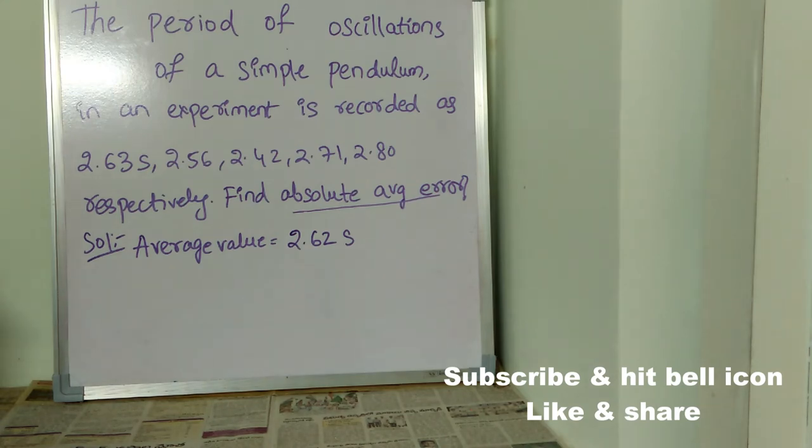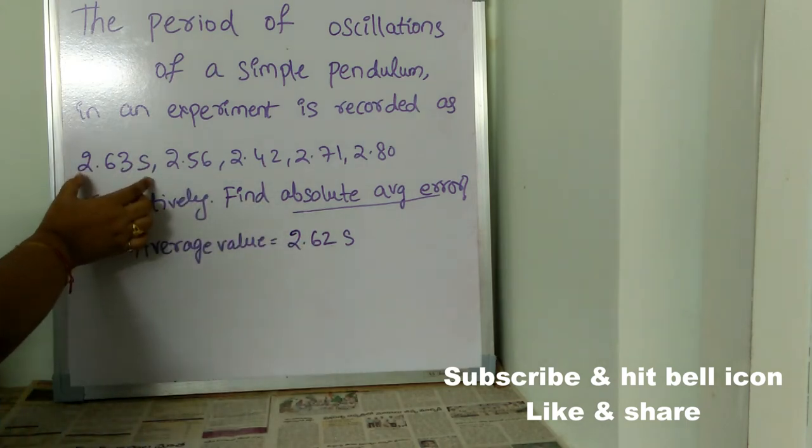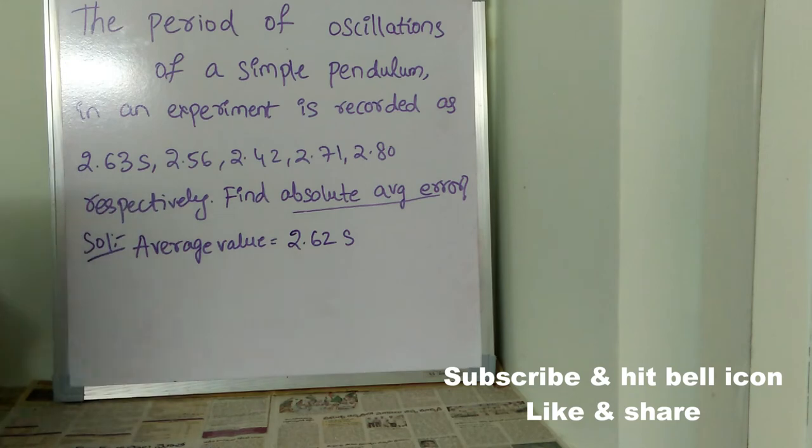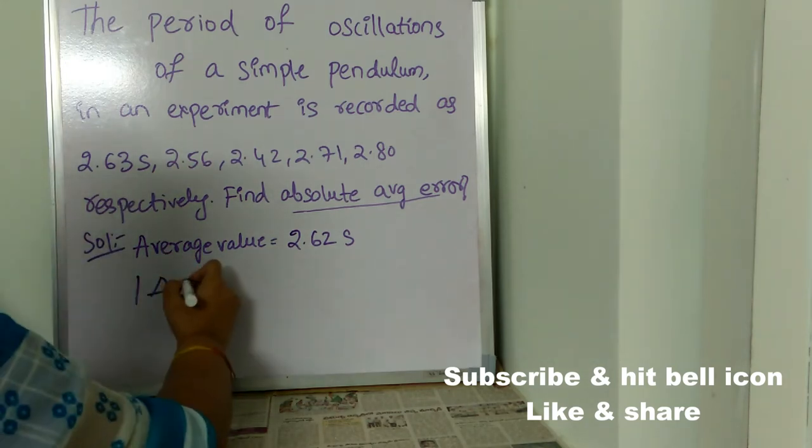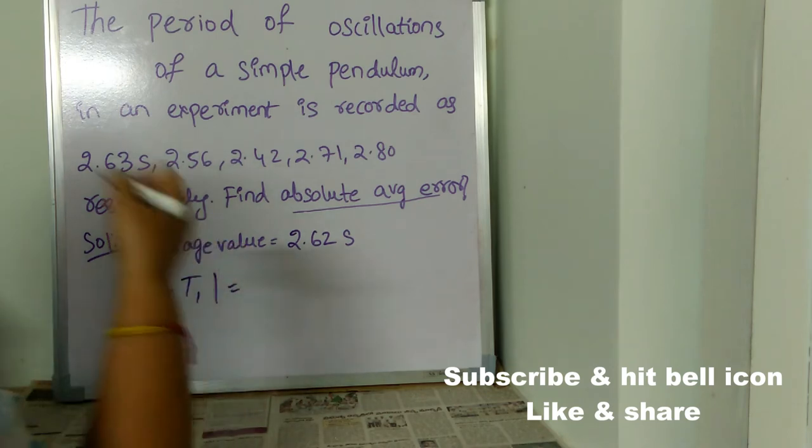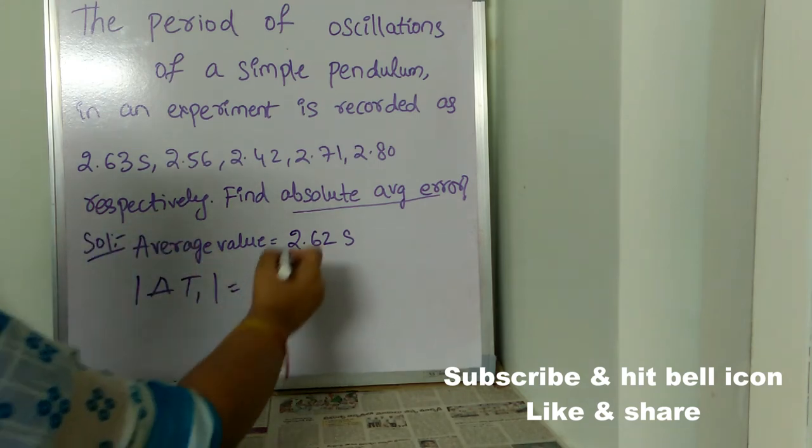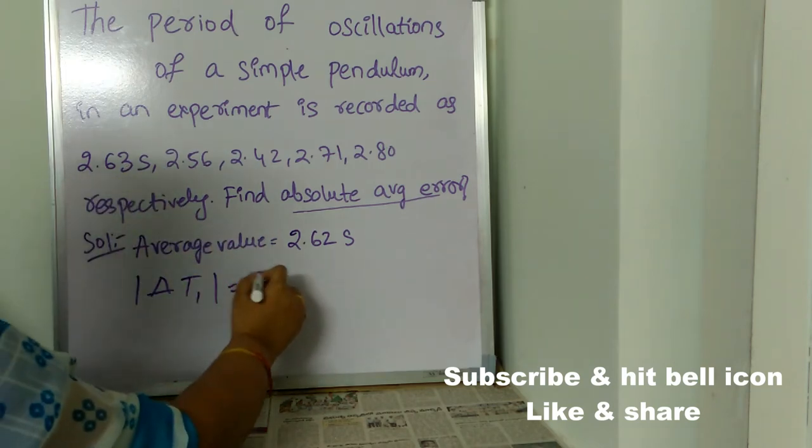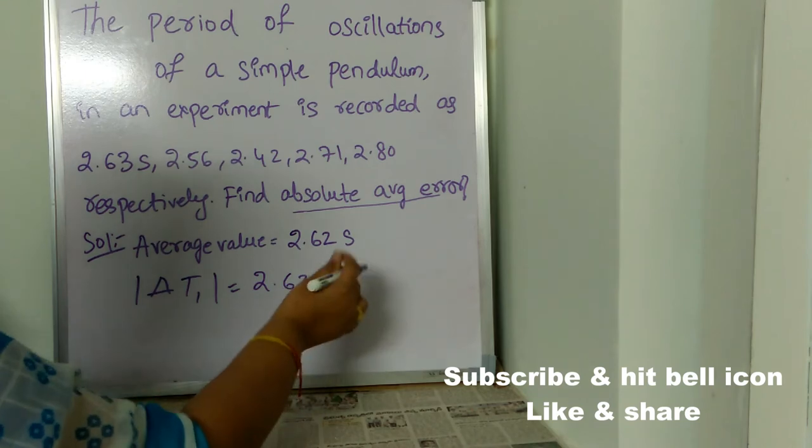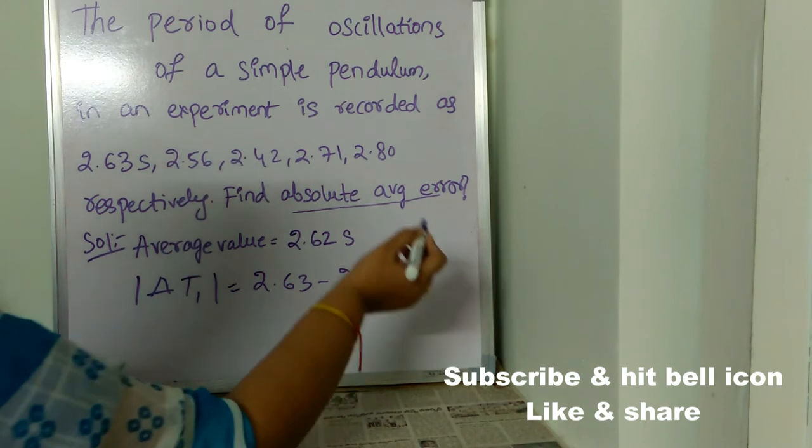First, what we need to do is we need to find the difference value between the average value which we found and the first value which is given. Delta T1 is equal to, we are denoting this difference with the value T. Delta T1 is equal to the first value, the first time which is recorded which is 2.63 seconds minus the average value which we found which is 2.62 seconds.